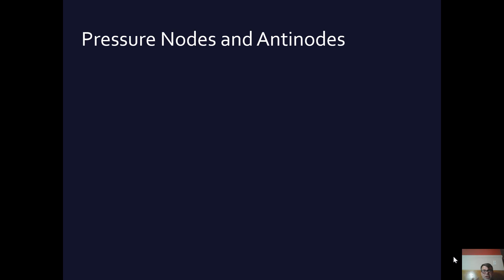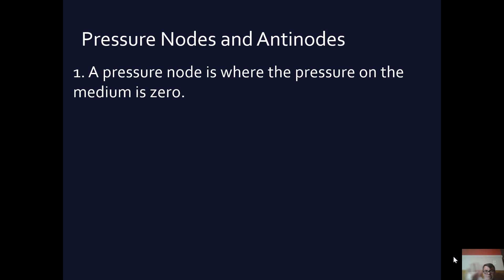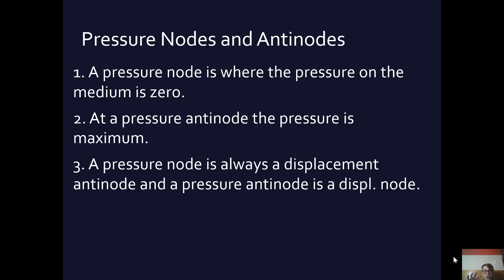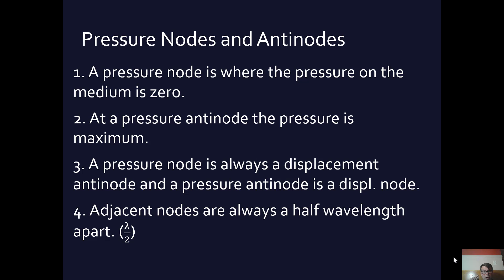Pressure nodes are opposite to displacement nodes. Where the pressure is maximum, the displacement is zero; where the pressure is zero, the displacement is maximum. A pressure node is where pressure on the medium is zero, and a pressure antinode is where the pressure is at maximum. So a pressure node is always a displacement antinode — where pressure is zero, displacement is maximum. But where pressure is maximum, displacement is zero. Therefore, a pressure antinode is a displacement node. Adjacent pressure nodes, just like adjacent displacement nodes, are always a half wavelength apart.